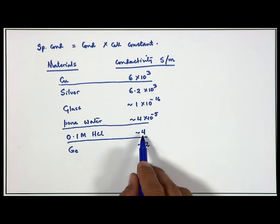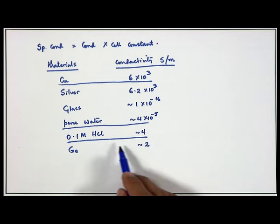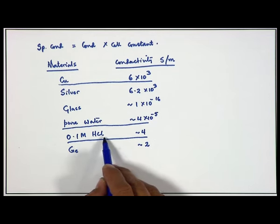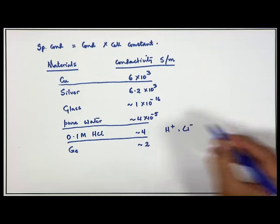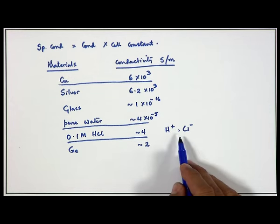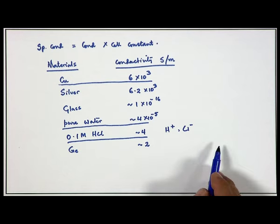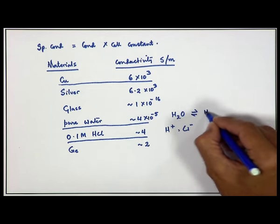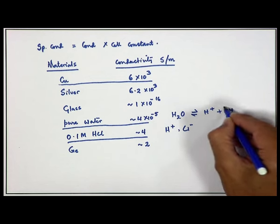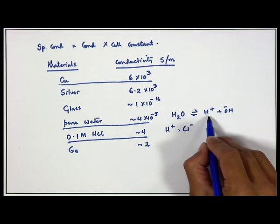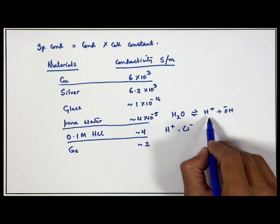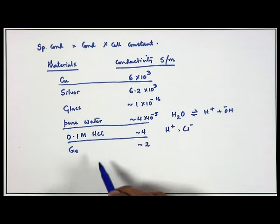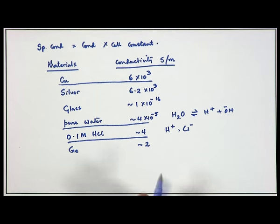Why is 0.1 molar HCl so much more conductive than pure water? In HCl you have H⁺ and Cl⁻ ions responsible for transporting electrical charge. Pure water is only feebly ionized to H⁺ and OH⁻, so very few ions are present and conductivity is quite low.